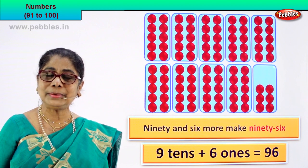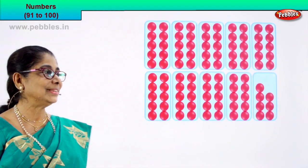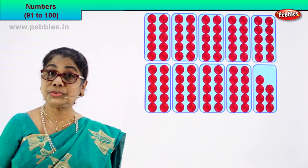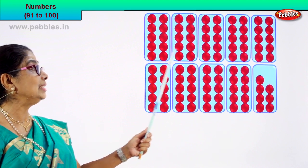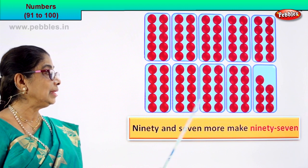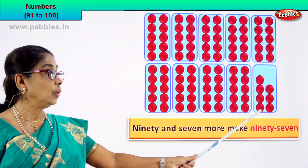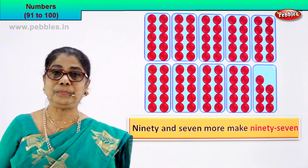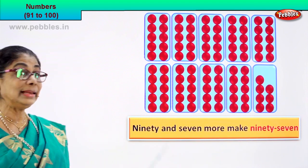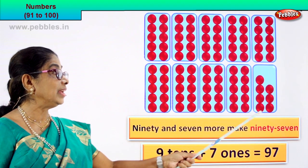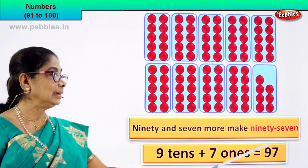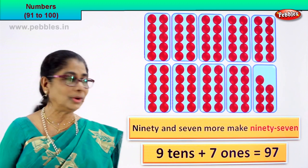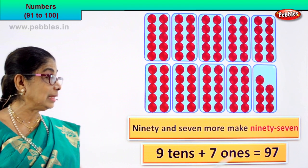Shall we go to the next number? Let's count the boxes. One, two, three, four, five, six, seven, eight, nine — nine boxes of ten each. Count in tens: 10, 20, 30, 40, 50, 60, 70, 80, 90. And how many more? 1, 2, 3, 4, 5, 6, 7 — 90 and seven more make 97. Nine tens plus seven ones equal to 97. The numeral is 97, number name 97. What is 97? Nine tens plus seven ones.